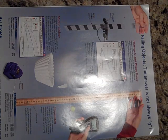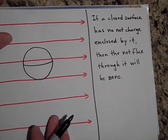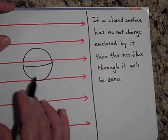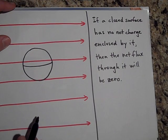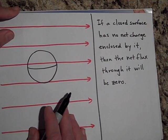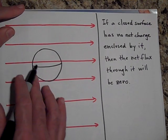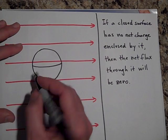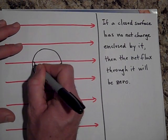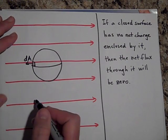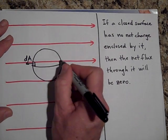Okay. Well, here's the point then. If a closed surface has no net charge enclosed by it, then the net flux through it will be zero. So if I put a closed surface there and I ask myself what's the total flux going through there, then it turns out that for every little dA I have right here—here's a little dA going this way—I have another one on this side.